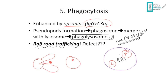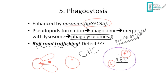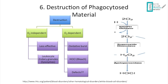A defect in this railroad trafficking causes Chediak-Higashi syndrome. Patients have recurrent infections due to failure of phagolysosome fusion. They also develop neutropenia because microtubules are essential for mitosis, so neutrophil replication is impaired. Additional features will be covered in the defects table.